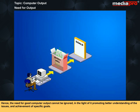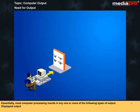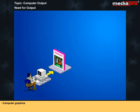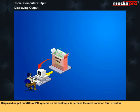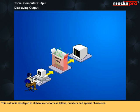Essentially, most computer processing results in any one or more of the following types of output: displayed output, computer graphics, printed output, filmed output, or voice response. Displayed output on VDTs or PC systems on the desktop is perhaps the most common form of output. This output is displayed in alphanumeric form as letters, numbers, and special characters.